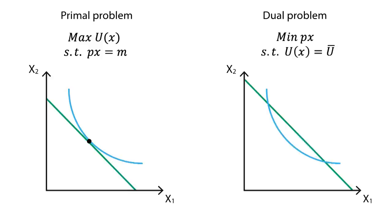For the dual problem, it is utility that is fixed as a restriction, and cost that we can play around with. Therefore, we'll choose to spend as little as possible to reach the desired level of utility.